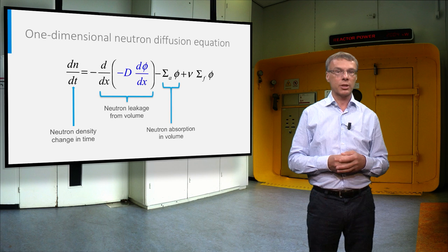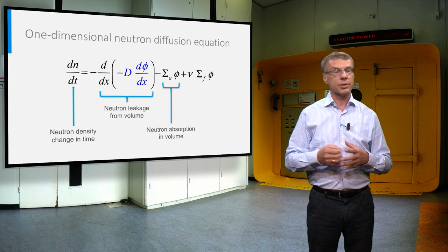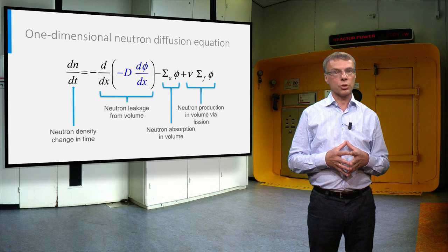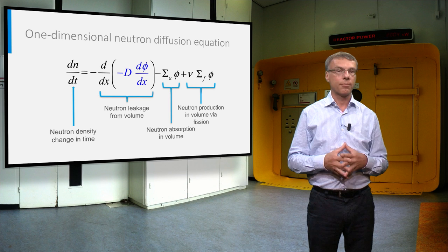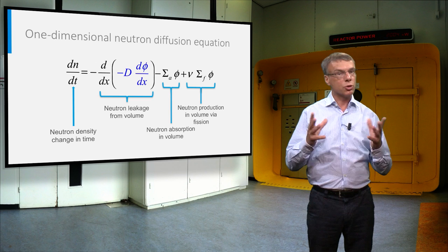The second term on the right hand side is the absorption rate of neutrons, which is also a lost term, and which has therefore also a minus sign in front of it. And the third term on the right hand side is the fission neutron source term. This is equal to the fission rate density multiplied by the average number of neutrons released in a fission event, indicated by NU. For most reactors using uranium as a fuel, NU has a value of about 2.5.